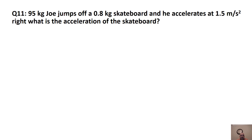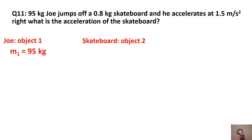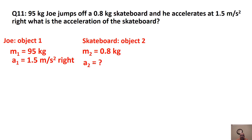Here we have 95-kilogram Joe jumping off a 0.8-kilogram skateboard. Joe is accelerating at 1.5 meters per second squared to the right. We're asked for the acceleration of the skateboard. Keeping them separate: M1 = Joe = 95 kg, A1 = 1.5 m/s² to the right; M2 = skateboard = 0.8 kg, A2 = unknown.